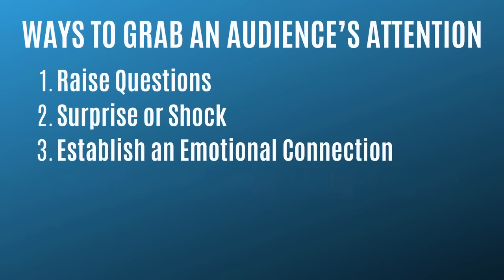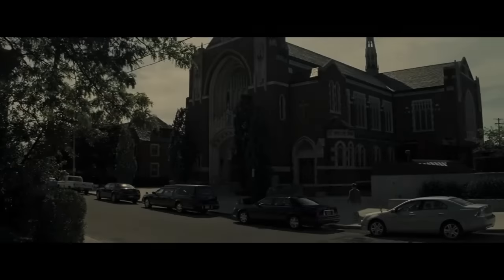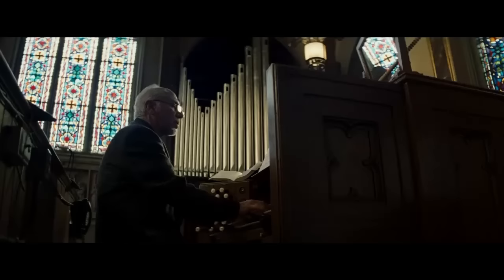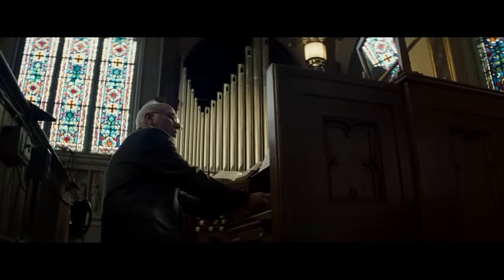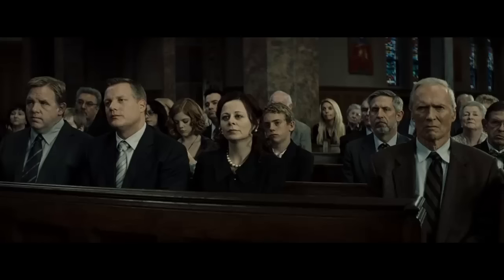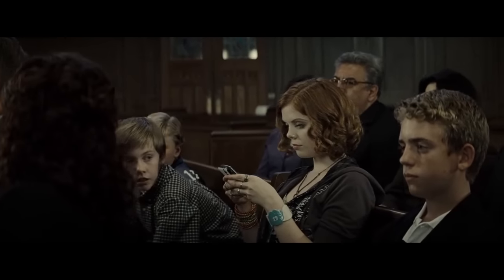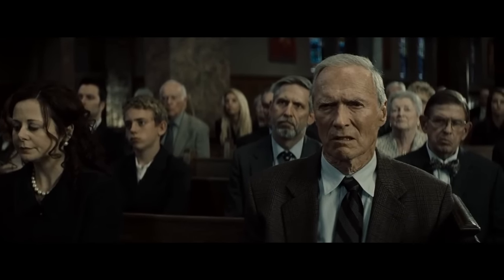Another way to grab your audience's attention is by showing conflicting ideas or emotions — this is how you create tension. A great example comes from Gran Torino. At the very beginning, we're in a church for a funeral mass. We see the main character Walt Kowalski mourning the loss of his wife. Then his family disrespects him — they show up late, dressed inappropriately, bad-mouthing him behind his back. These clashing emotions, Walt being sorrowful while his family is indifferent, create tension and signal there's plenty of conflict yet to come.